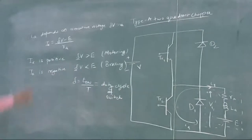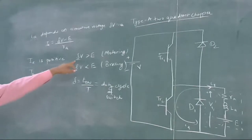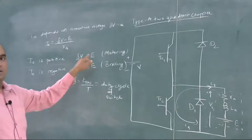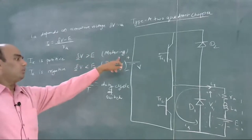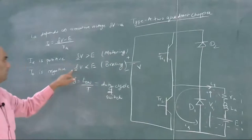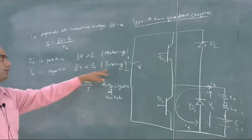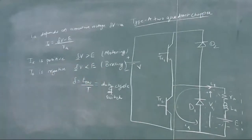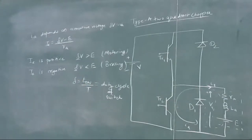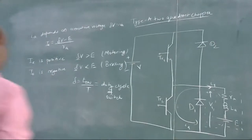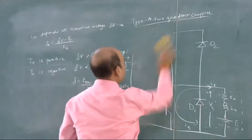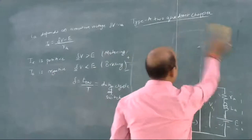The armature current is either positive or negative depending on δV. If δV is greater than back EMF E, the motor works in the motoring region. If back EMF E is greater than δV, it behaves like a generator and works in the braking region. This drive can work in two quadrants.